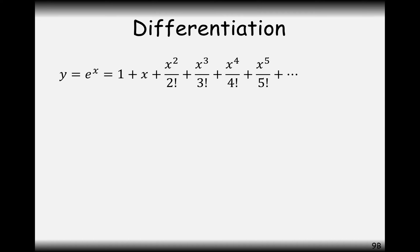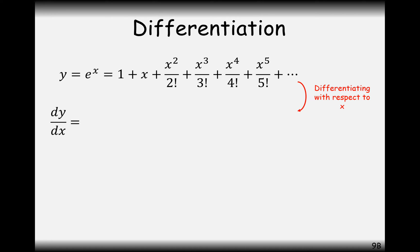The first rule is e to the x. How does e to the x differentiate? What I'm going to use is the series expansion for e to the x. Did you know that e to the x can be written as 1 plus x plus x squared over 2 factorial plus x cubed over 3 factorial plus x to the 4 over 4 factorial, and that carries on up to infinity. To differentiate this with respect to x, I can differentiate each of these terms separately using the standard rule: multiply the power to the front and take away 1 from the power.